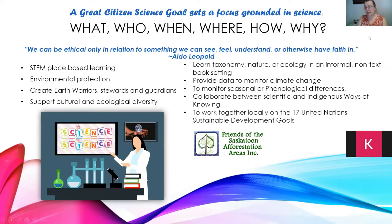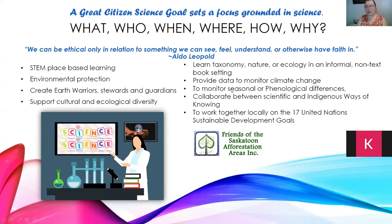Citizen science helps document our ecological and cultural diversity. It's a great way for students to learn about taxonomy, nature, and ecology in an informal, non-textbook setting. Several universities use iNaturalist as a learning resource for taxonomic research. It's also a great way to monitor climate change — one project involved watching molting patterns on mountain sheep in BC to see if climate change was affecting molting timing, and seasonal or phenological differences also produce quite a lot of changes.